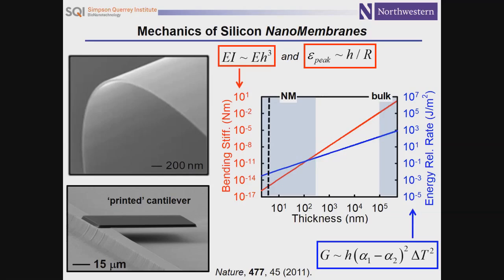We think about silicon nanomembranes due to their extreme mechanical flexibility, their low bending stiffness, and their capacity for use in heterogeneously integrated systems where you're combining inorganic and organic materials together. A collection of properties that follow very straightforwardly from fundamental considerations in materials mechanics — in particular bending mechanics and adhesive mechanics — where reductions in thickness have all kinds of benefits in terms of mechanical bendability and the ability to join dissimilar materials together.